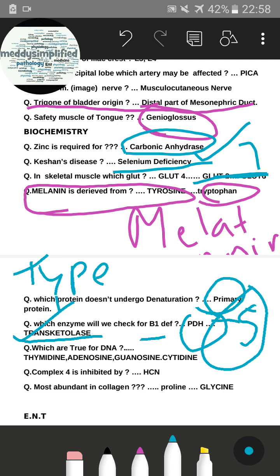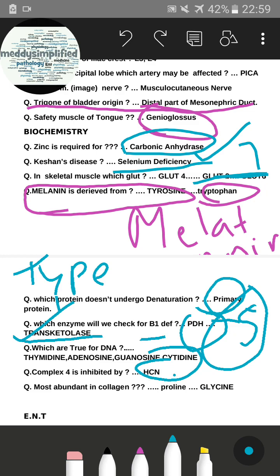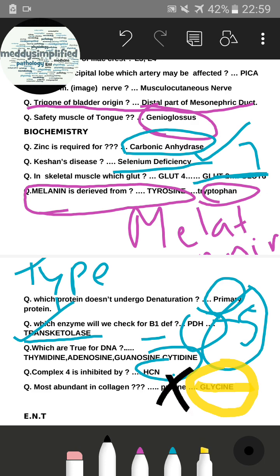There was a question about which are true for DNA — four options with nucleosides: thymidine, adenosine, guanosine, and cytidine were given instead of nucleotides. Complex IV of the electron transport chain is inhibited by hydrogen cyanide — no doubt there. For the most abundant amino acid in collagen, the debate is between proline and glycine; the correct answer is glycine.